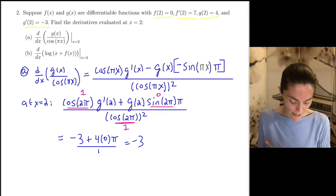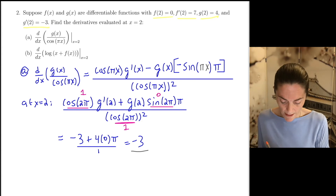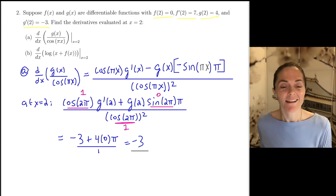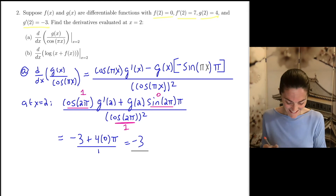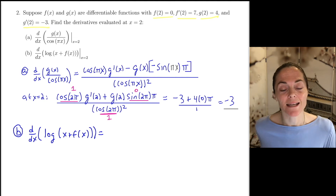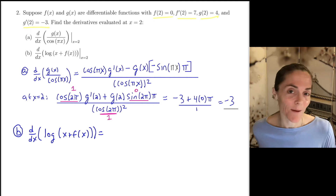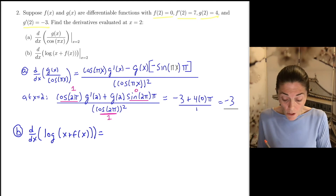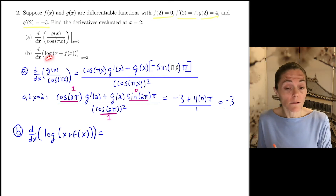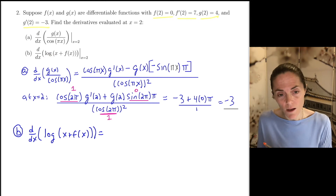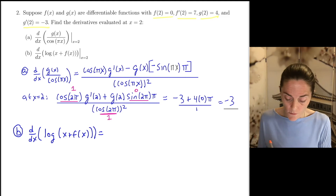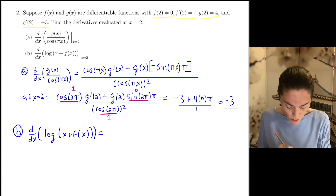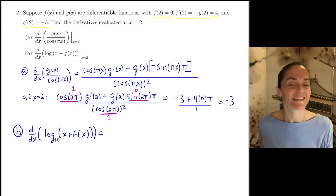Now let's work on 2B. As before, first I just differentiate the function and then evaluate at 2. Notice, looking at this, this is not natural log — this is log, and if we just see log, it's base 10, so there is an understood little 10. First thing: I have chain rule. The derivative of the outside function, log base 10, is 1 over ln 10 times x, evaluated at my inside function, x plus f of x.